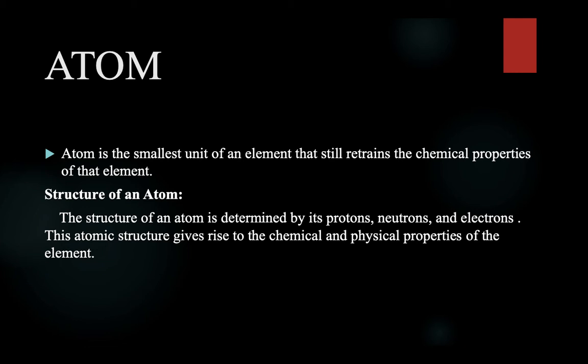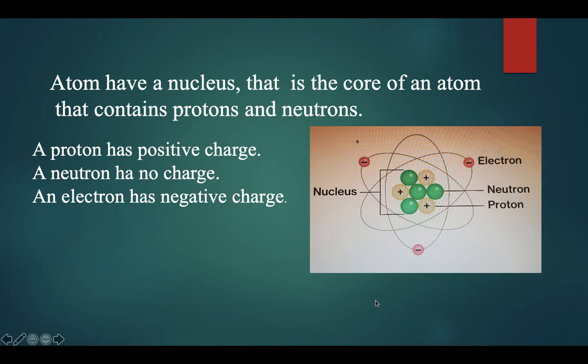For examples of physical properties, color, shininess, and freezing point. Atoms have a nucleus that is the core of an atom that contains protons and neutrons. A proton has positive charge, a neutron has no charge, and an electron has negative charge.